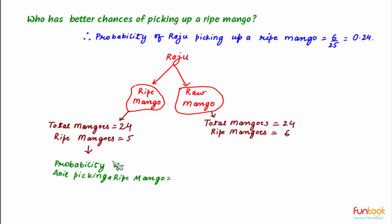So in this case, probability of Anil picking up a ripe mango will be 5 by 24 which will be approximately equal to 0.21.